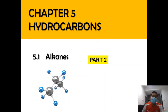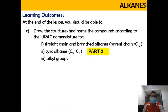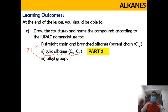Hi, Assalamualaikum and a very good morning. So now we are in chapter 5 which is hydrocarbon, focusing on the subtopic of 5.1 alkanes, part 2 of this video. In this video we're going to draw the structure and name the compound according to the IUPAC nomenclature for the cyclic alkanes which consists from C3 until C6. So without any further ado, let us start.